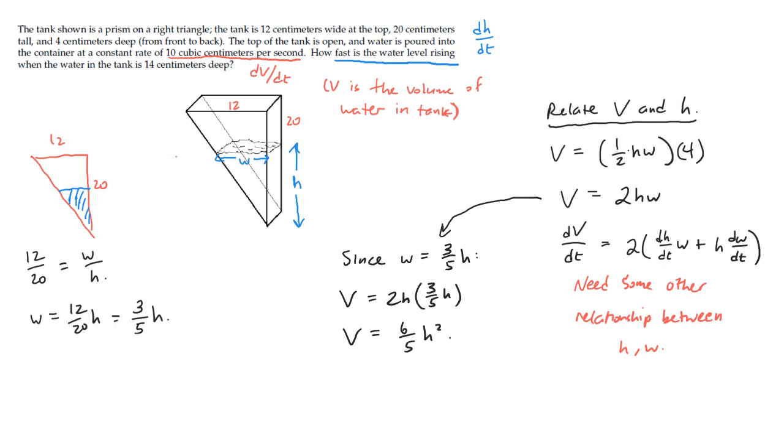And now we can try again taking the derivative of each side with respect to time. On the left, dV/dt. On the right, we get 6/5ths times 2h. And then remember, because h serves as a kind of inside function, we got to multiply by its derivative as well. That's dh/dt.